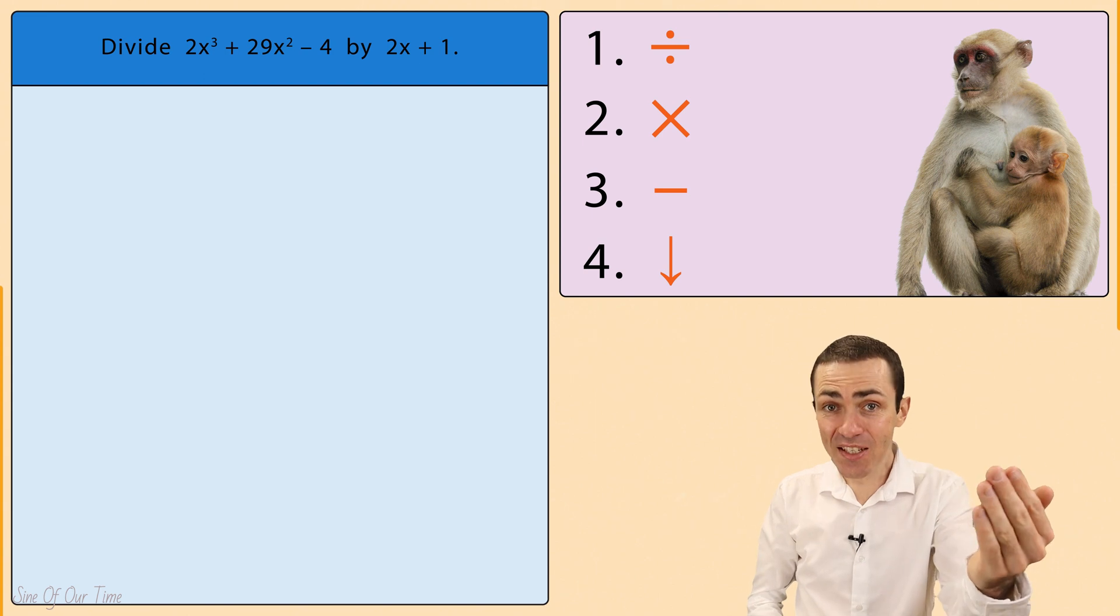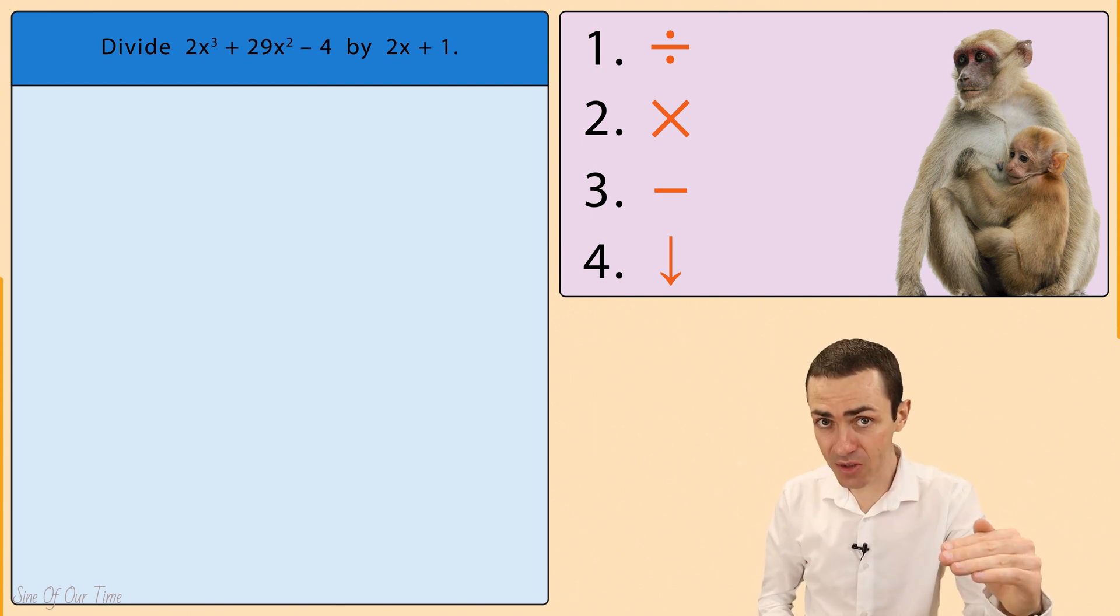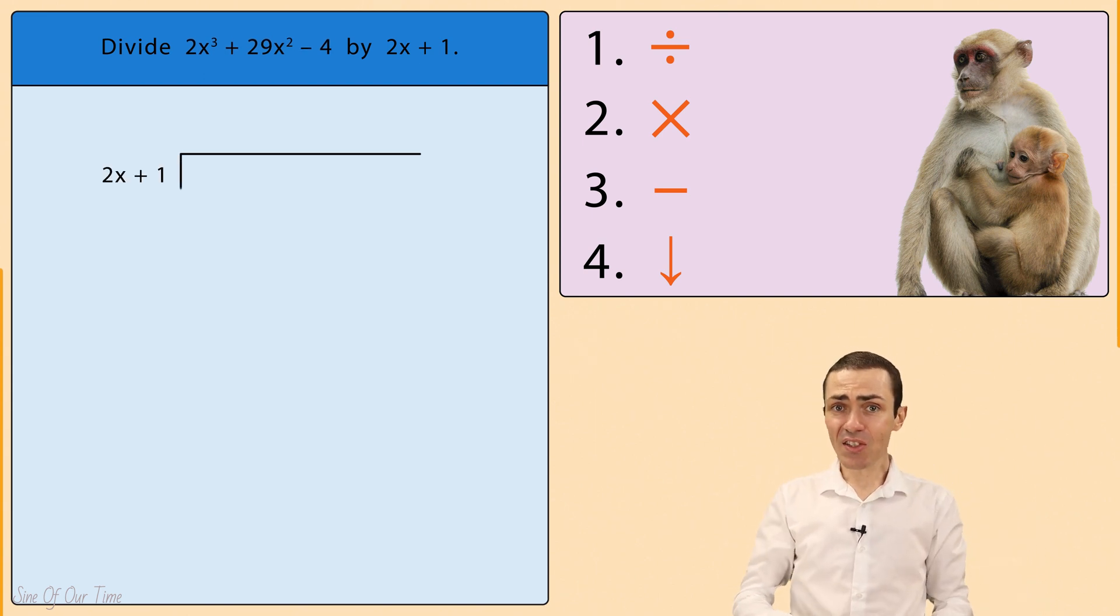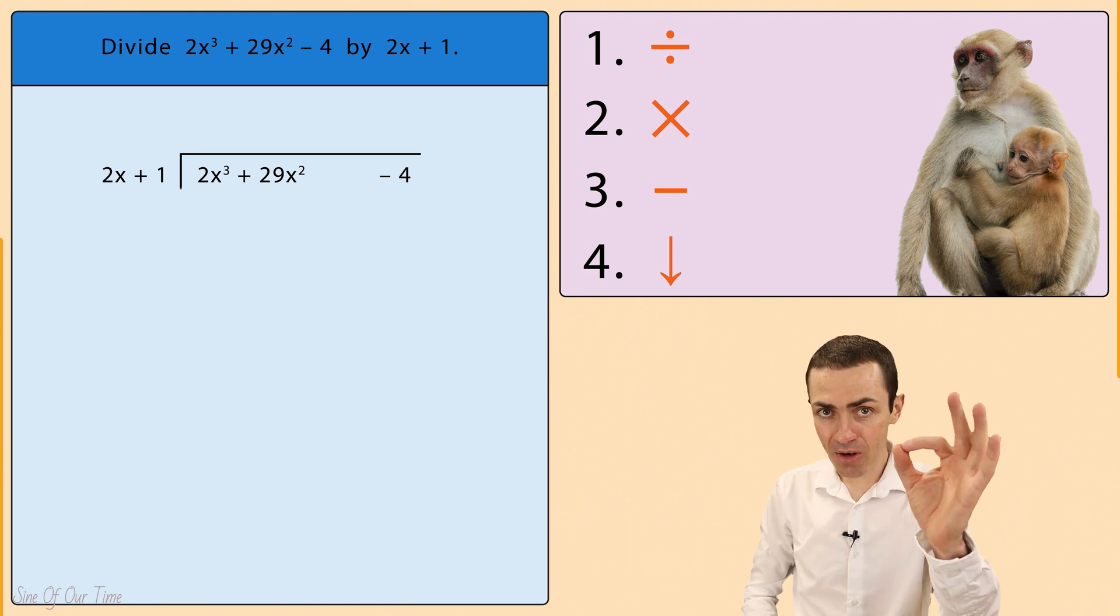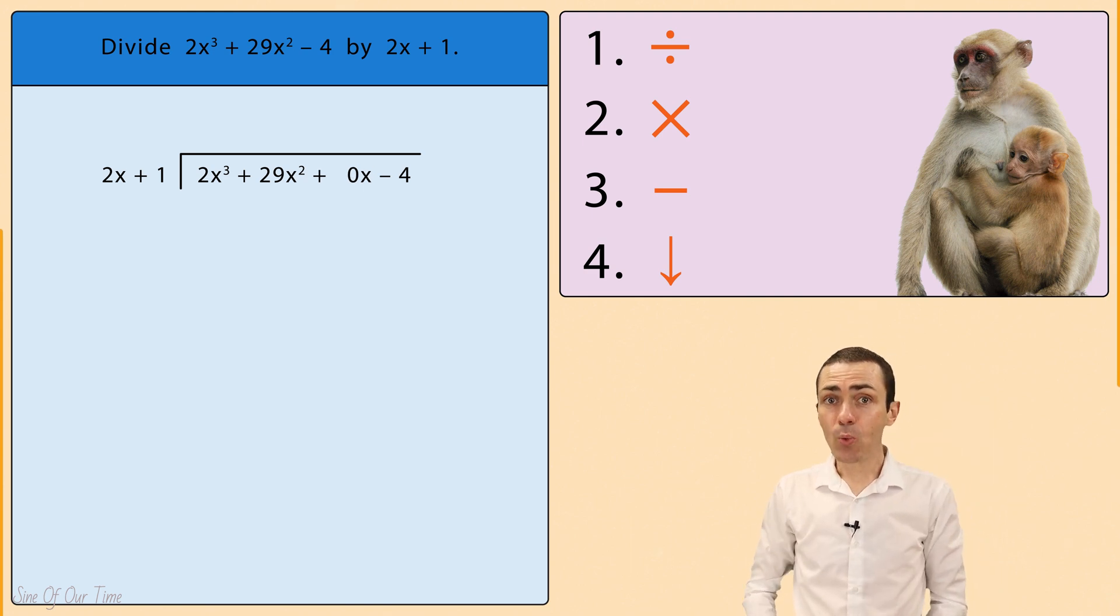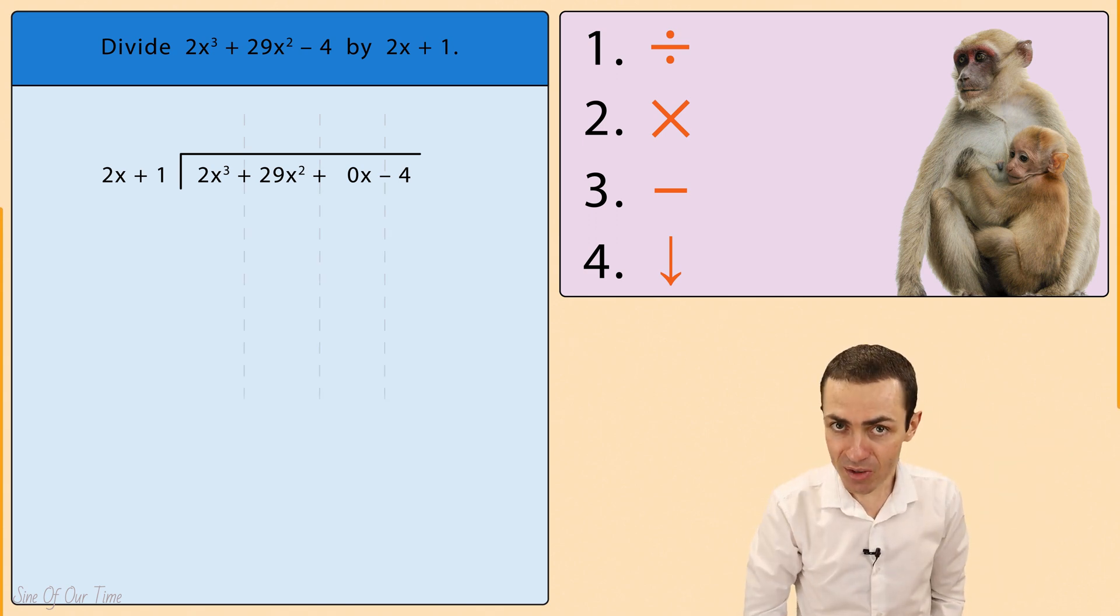Let's begin by writing the dividend under the long division symbol, and since there is no x in the dividend, it is important for us to create a placeholder where we can simply write 0x. And remember, we need to imagine that there are virtual columns that separate the terms of the dividend.